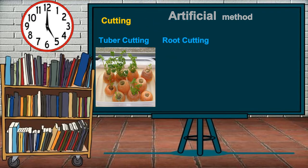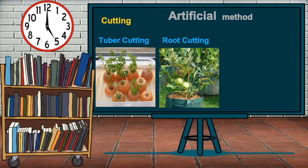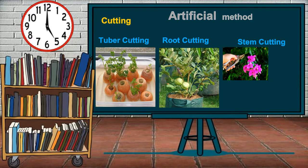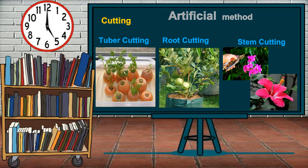With root cuttings, when the shoots grow, they are transferred to permanent plots. The third is stem cutting, divided into two classes. The first is hardwood cutting, made from mature twigs — as in the case of bougainvillea. The second is softwood cutting, made from young and immature parts of the plant, as in the case of gumamela and San Francisco.